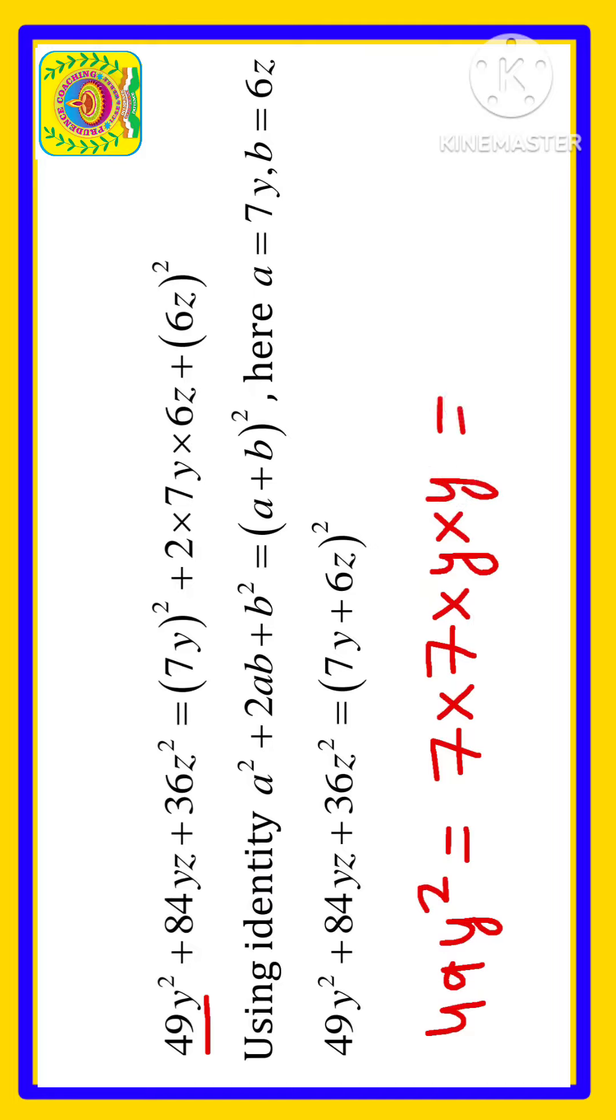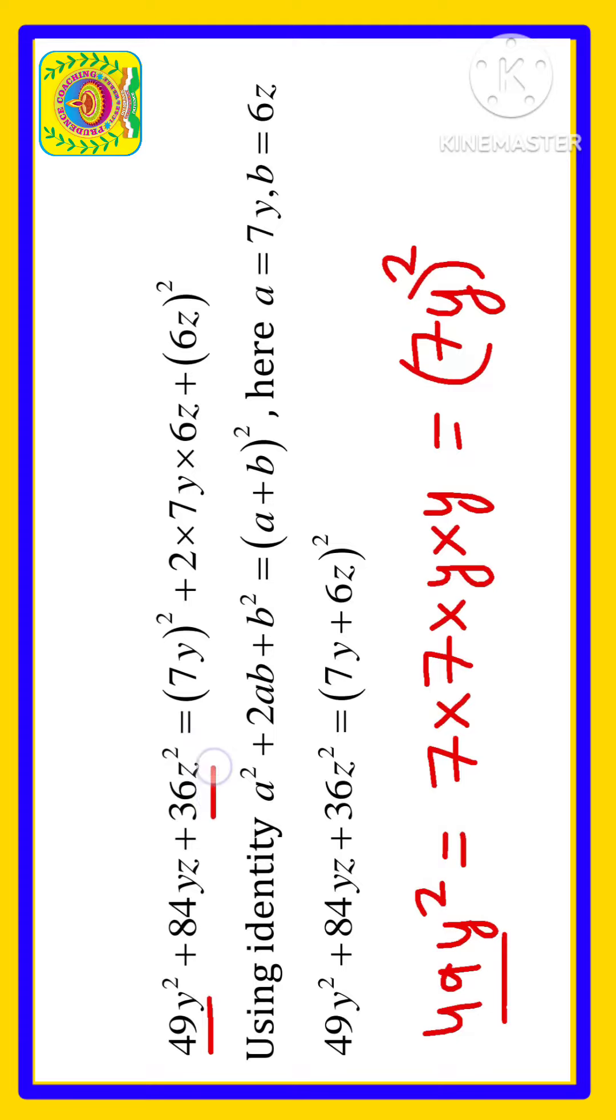As you can see we have 2 times multiplied 7 and y also 2 times, so we can write (7y)². So 49y² can be written as (7y)².